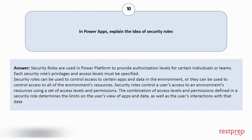Security roles control a user's access to an environment's resources using a set of access levels and permissions. The combination of access levels and permissions defined in a security role determines the limits on the user's view of apps and data, as well as the user's interactions with that data.